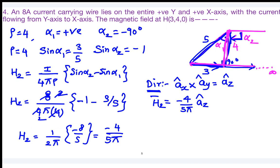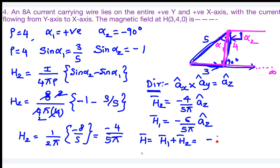The total magnetic field intensity H = H₁ + H₂ = −6/(5π) â_z + (−4/(5π)) â_z = −10/(5π) â_z = −2/π â_z amperes per meter.